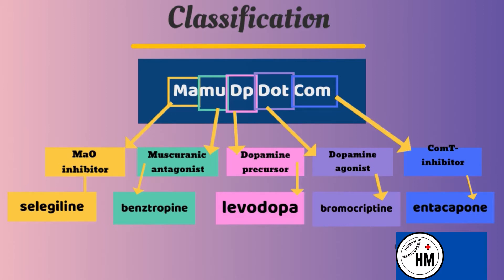Dopamine cannot be used directly as a dopamine precursor because it does not cross the blood brain barrier. Let's talk about their mechanism of action one by one.